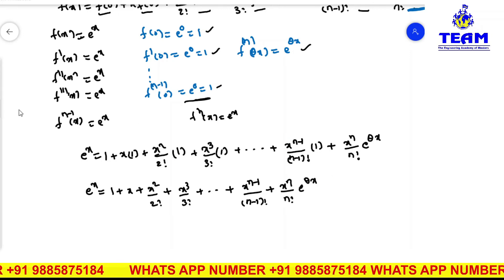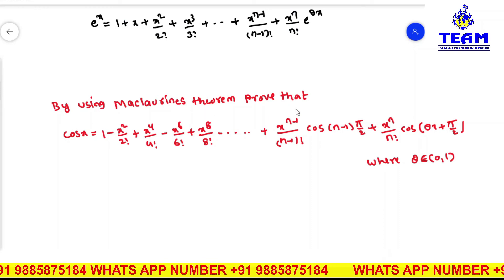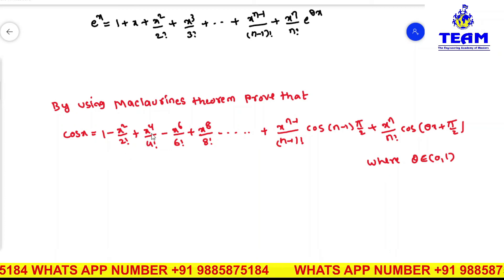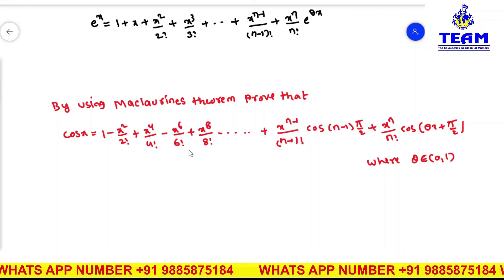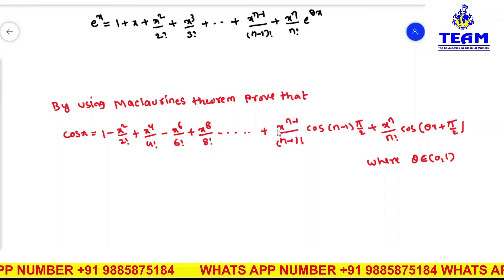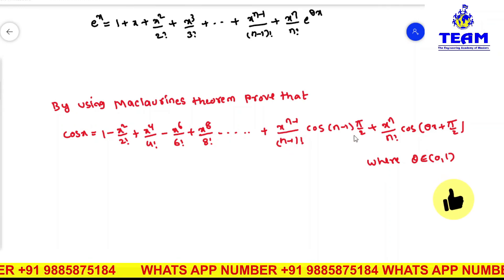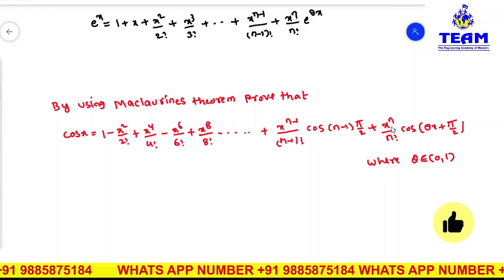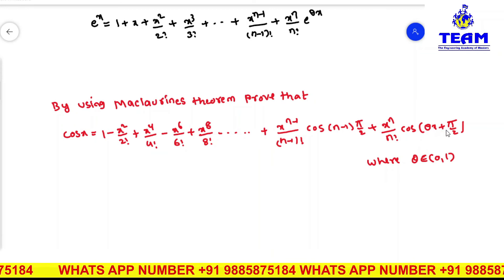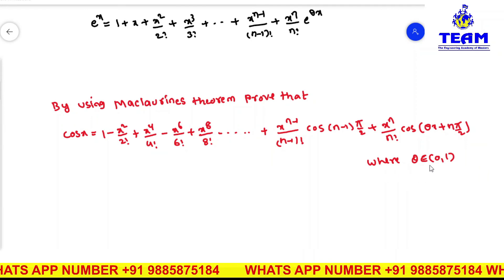In the next video, we are discussing: using Maclaurin's theorem, prove that cos x = 1 - x²/2! + x⁴/4! - x⁶/6! + x⁸/8! + ... + (x^(n-1)/(n-1)!) · cos((n-1)π/2) · cos(θx + nπ/2), where θ belongs to (0, 1).